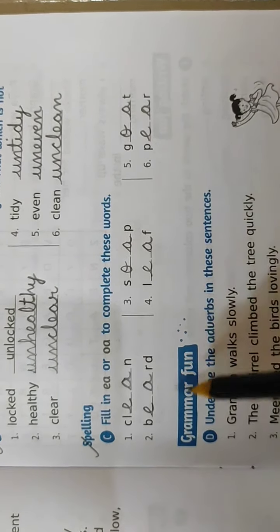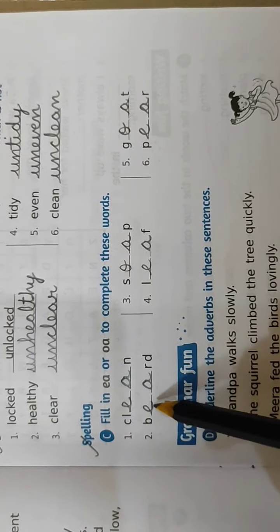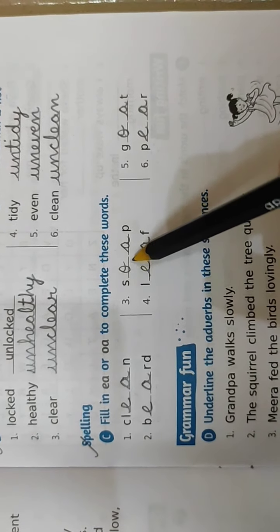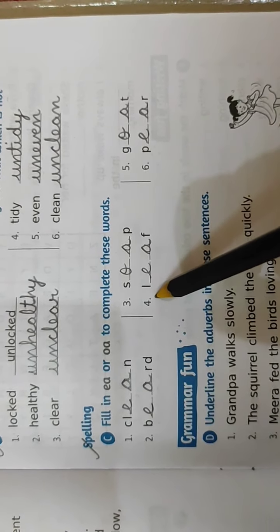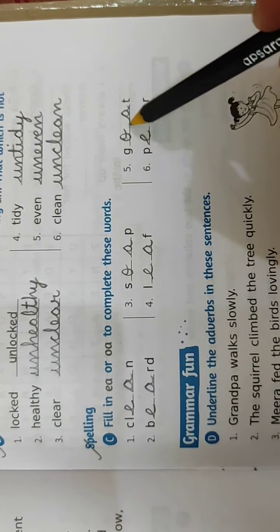I will repeat the answers once again. Clean, E-A. Beard, again E-A. Number 3, O-A, soap. Then leaf, E-A. Then number 5, O-A, goat. And last number 6 is E-A, pear.